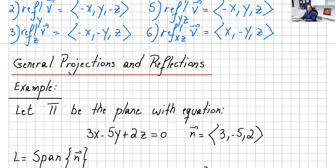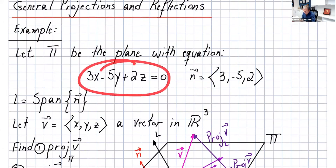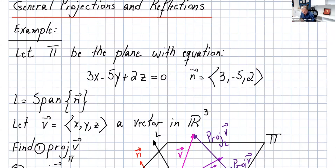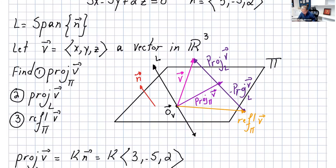Now let's talk about general projections and reflections — not always the xy, xz, or yz planes. Maybe we have a plane in 3D that passes through the origin. Let's call that pi. The normal vector of this plane has components (3, -5, 2), and L is the span of n. The span of one vector in R3 is a line parallel to n, perpendicular to the plane.